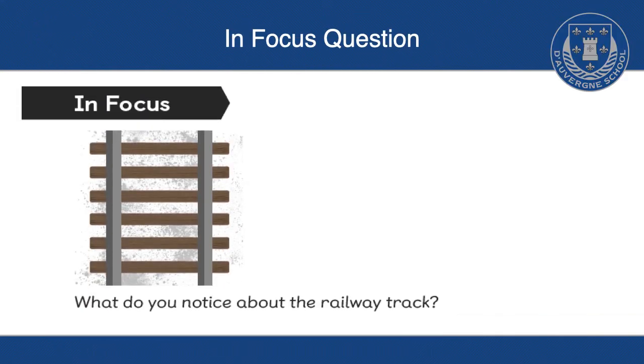The in-focus question. So it says, what do you notice about the railway track? So we've got two iron bars, two iron tracks, and then running throughout them, we have wooden slacks. So that's what the picture's of.